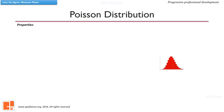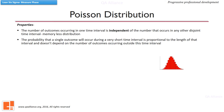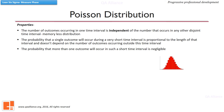Now let us see the characteristics of Poisson distribution. The number of outcomes occurring in one time interval is independent of the number that occurs in any other disjoint time interval — that is why it is called a memoryless distribution. The probability that a single outcome will occur during a very short time interval is proportional to the length of that interval and doesn't depend on the number of outcomes outside this interval. The probability that more than one outcome will occur in such a short time interval is negligible. In a Poisson experiment where the average number of successes within a given region is Mu, the Poisson probability is calculated using this equation. X is the actual number of successes, and E is approximately equal to 2.71828.